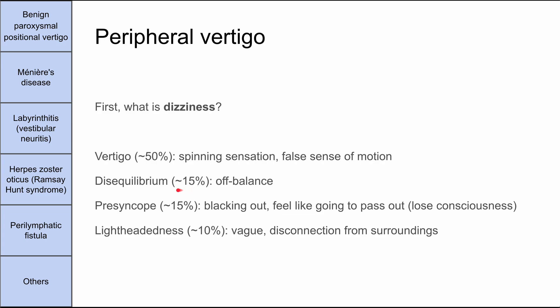In about 15% of cases patients really meant disequilibrium, which is feeling off balance. In another 15% they meant presyncope — feeling like they were going to black out or lose consciousness. In about 10% of cases the patient meant lightheadedness, a vague disconnection from surroundings. So a patient won't tell you they're feeling vertigo unless they've had it before — it's your job to tease out that they're having a spinning sensation indicating vertigo.